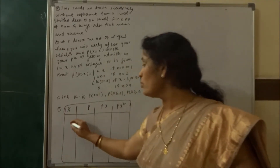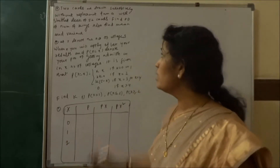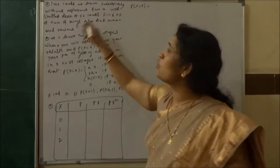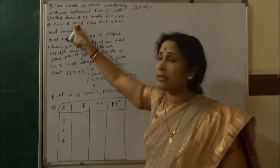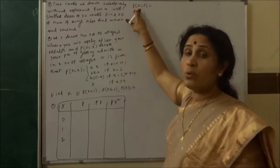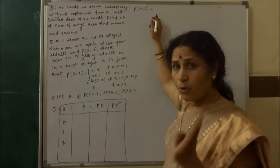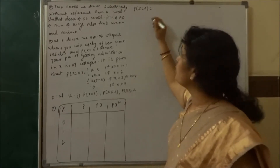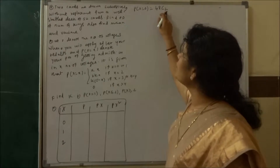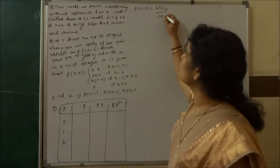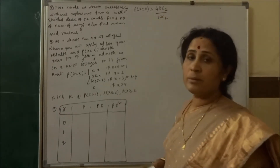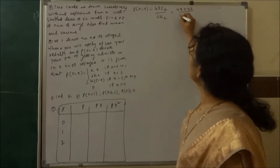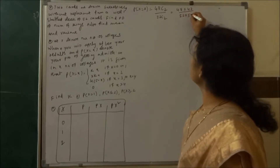Probability of x equal to 0 means no card is a King. We have four Kings in the deck, so we remove those four Kings from 52, leaving 48 cards. We need to choose 2 from those 48 non-King cards, divided by 52C2. That gives us 48×47 upon 52×51.